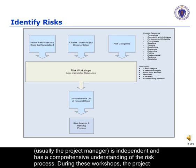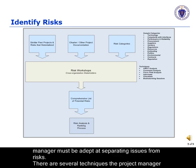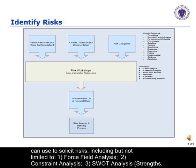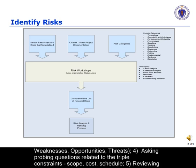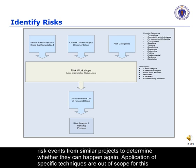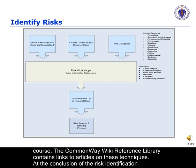During these workshops, the project manager must be adept at separating issues from risks. There are several techniques the project manager can use to solicit risks, including but not limited to: force field analysis, constraint analysis, SWOT analysis — strengths, weaknesses, opportunities, and threats — asking probing questions related to the triple constraints, and reviewing risk events from similar projects to determine whether they can happen again. Application of specific techniques is out of scope for this course. The CommonWay Wiki reference library contains links to articles on these techniques.